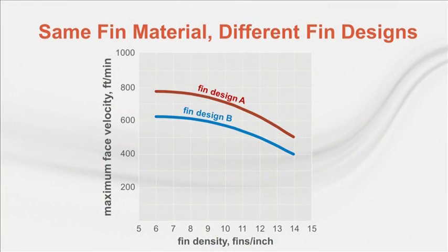Extensive testing of various fin designs and materials has resulted in a clearer understanding of how these factors affect moisture carryover. A chart showing laboratory-tested performance depicts maximum face velocity to prevent moisture carryover on the y-axis versus fin density on the x-axis. Moisture carryover is more challenging at higher fin densities where fins are more closely packed together. The chart also demonstrates the impact of fin surface design — fin design A is engineered to perform at higher coil face velocities without moisture carryover compared to fin design B, even with fins of the same material.